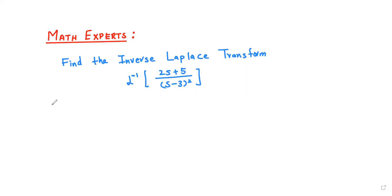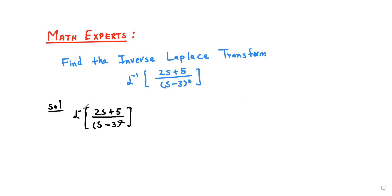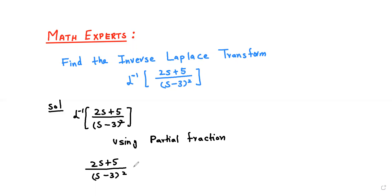So students, first of all, we are going to use partial fractions. We have the fraction (2s + 5) over (s minus 3) whole square. This is a proper rational fraction, and we decompose it into partial fractions: A over (s minus 3) plus B over (s minus 3) whole square.